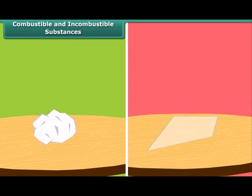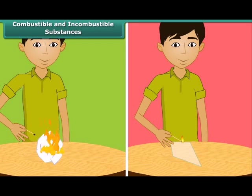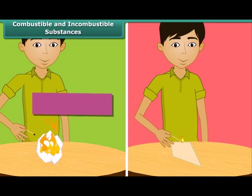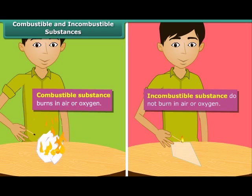There are two types of substances. Some substances catch fire and burn while others do not. The boy is bringing a lighted matchstick close to paper and glass. Paper catches fire and so it is called a combustible substance. Glass does not burn, and such substances which cannot burn in air or oxygen are called incombustible substances.